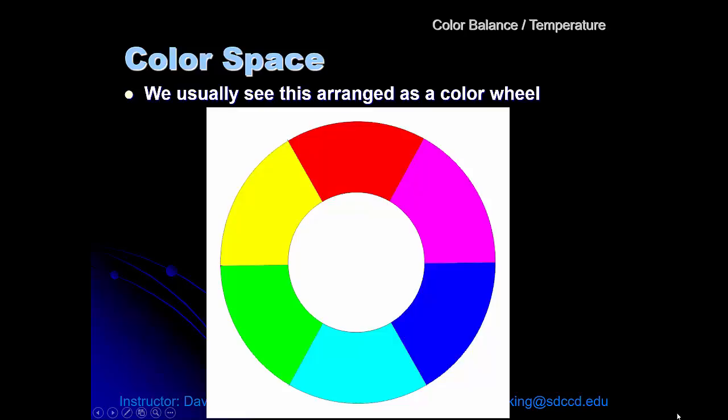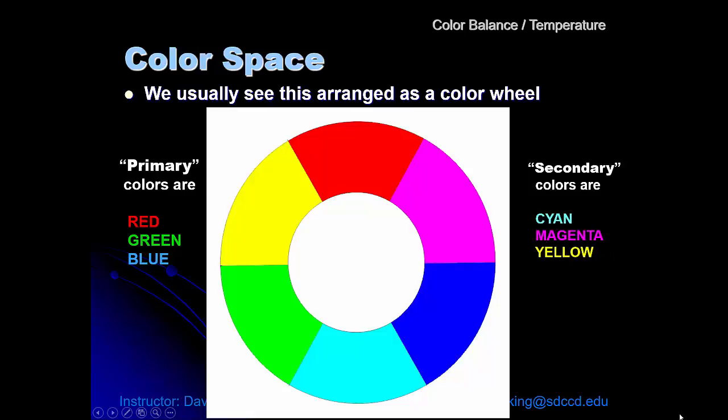We have this color wheel where our primary colors, the red, green, and blue, form the main triangle, and secondary colors are cyan, magenta, and yellow.